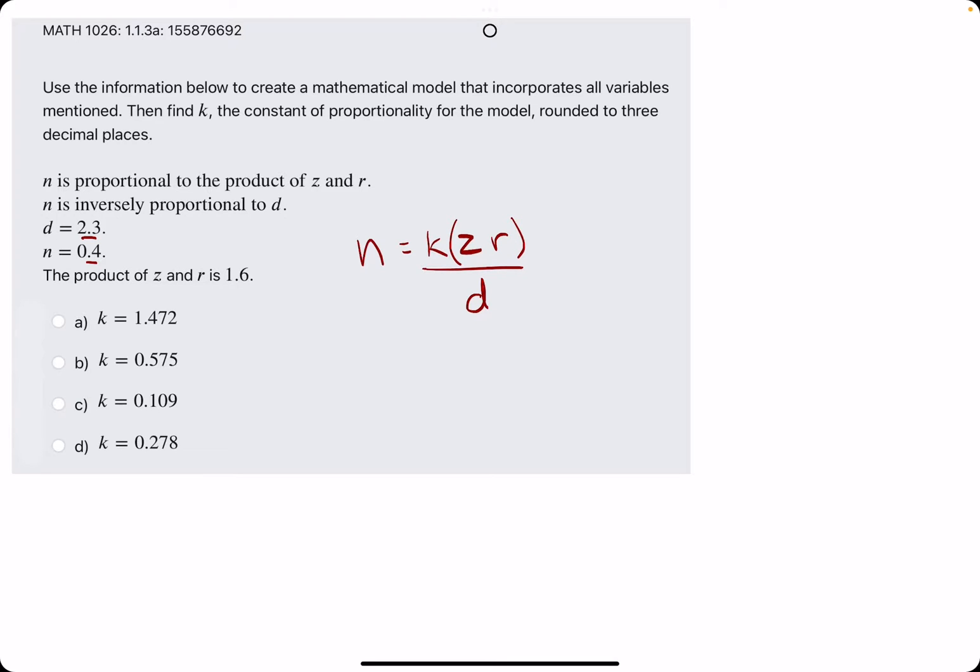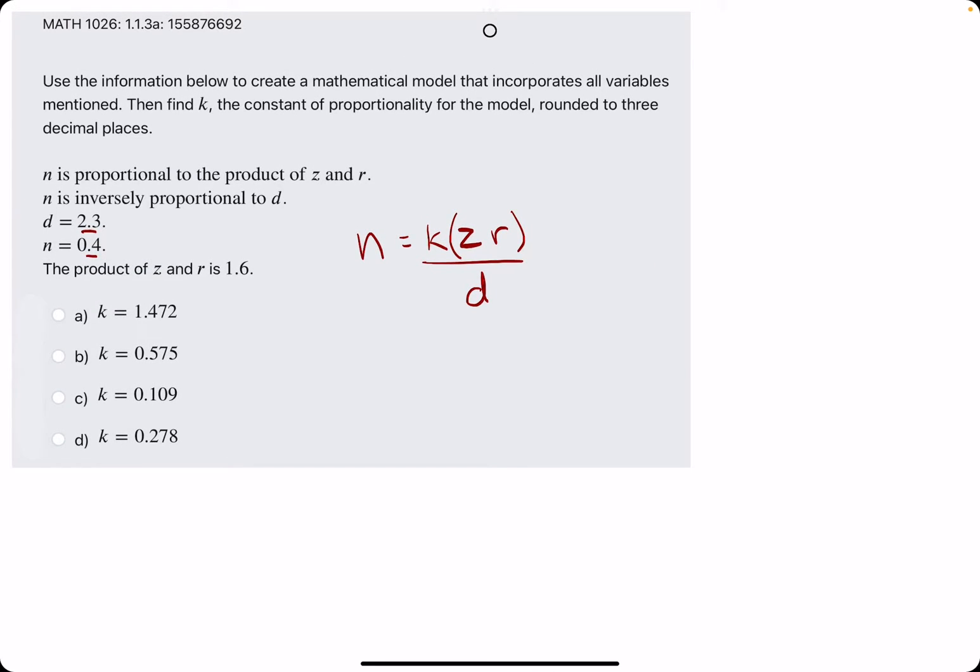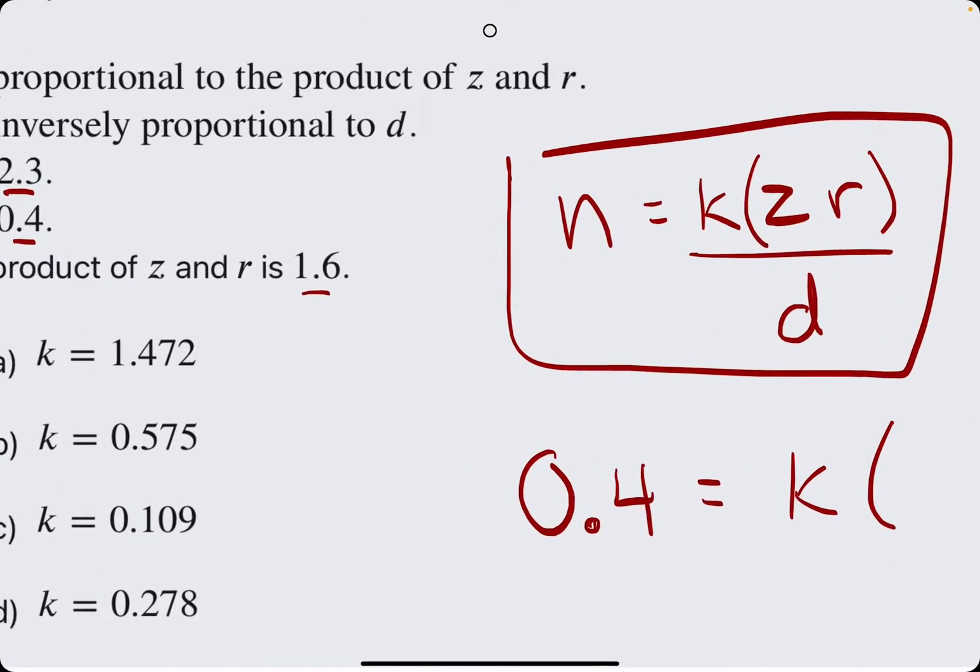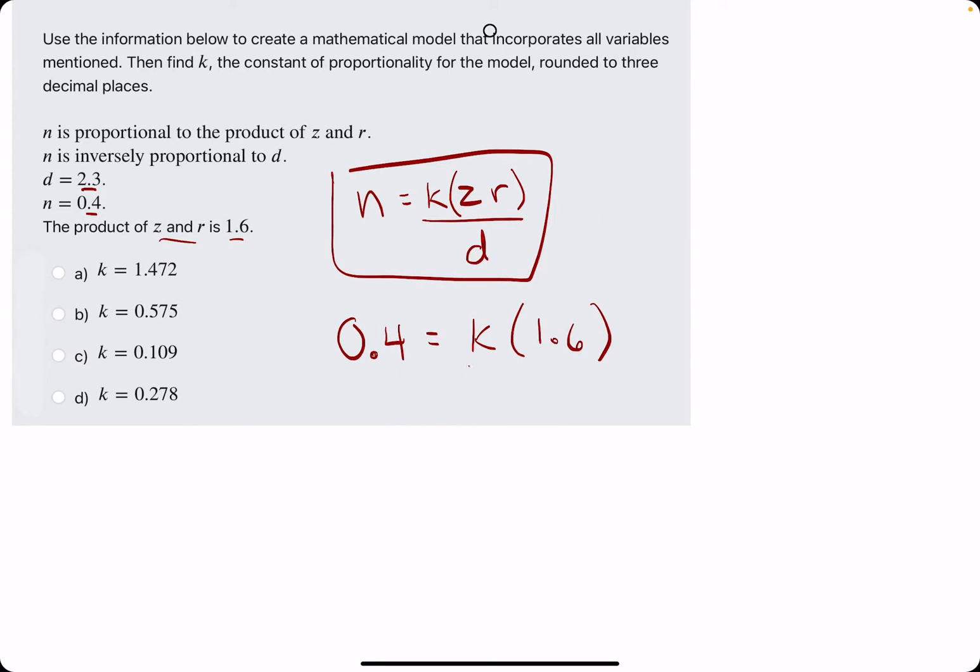Then they give us values for d and n and the product of z and r, and plugging all of those in is what will allow us to solve for k. So we will do just that. From this, we will plug in 0.4 for n, leave k as it is, plug in 1.6 for the product of z and r, and then plug in 2.3 for the value of d.